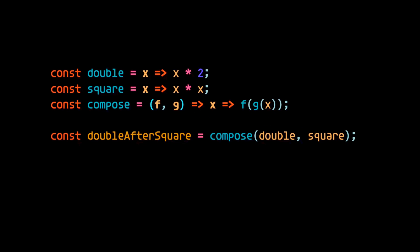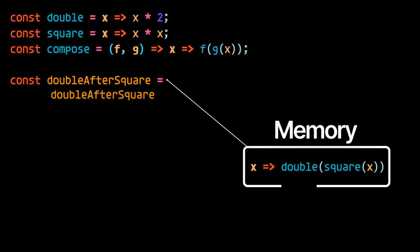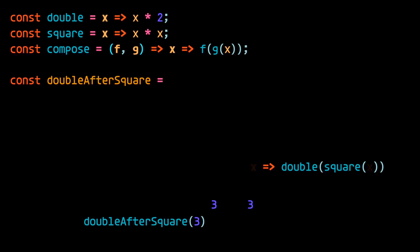We can then assign the resulting function of composing the two functions together to a variable. That variable now contains a function that will call one function on top of the other. And when we call that function, we'd first call the inner function, and its result will be passed into the outer function, which will output the result of the functions applied in sequence.